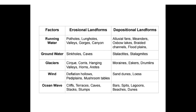Continuing the summary: glaciers depositional landforms are moraines, eskers, and drumlins. Wind — erosional: deflation hollows, pediplanes, mushroom tables; depositional: sand dunes and loess. Ocean waves — erosional: cliffs, terraces, caves, stacks, and stumps; depositional: bars, spits, lagoons, beaches, and dunes.